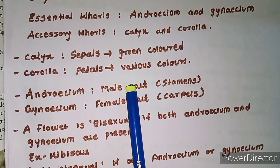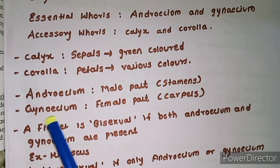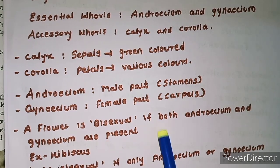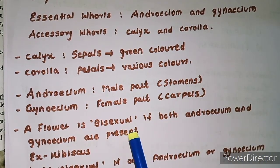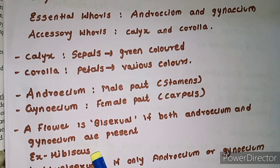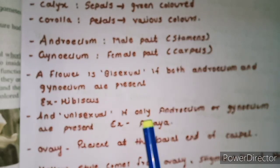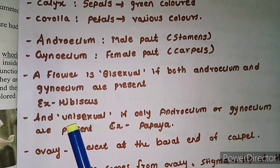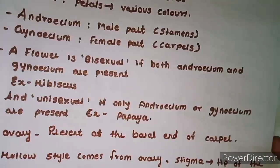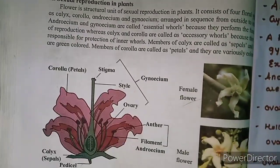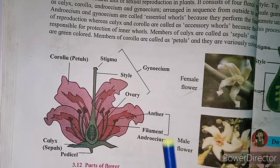Androecium is the male part, also called stamens. Gynaecium is the female part, which we call carpels. If both Androecium and Gynaecium are present in one flower, it is called bisexual. Looking at the diagram, Androecium — the male part — consists of anther and filament. The anther produces pollen grains.